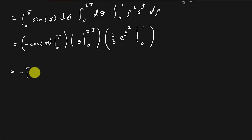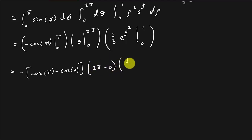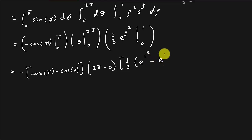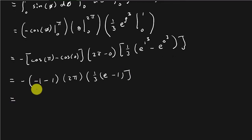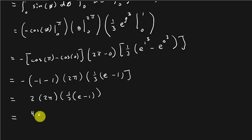Now we have: −(cosπ − cos0) times (2π − 0) times (1/3)(e^(1³) − e^(0³)). That's −(−1 − 1) · 2π · (1/3) · (e − 1) = 2 · 2π · (1/3) · (e − 1) = 4π/3 · (e − 1). And there's your answer.